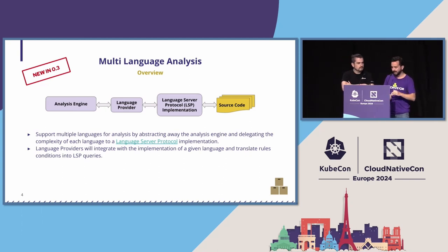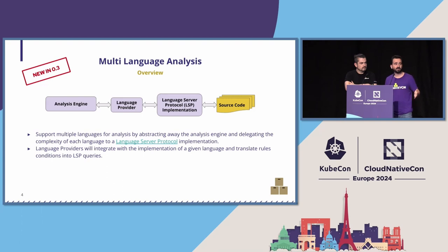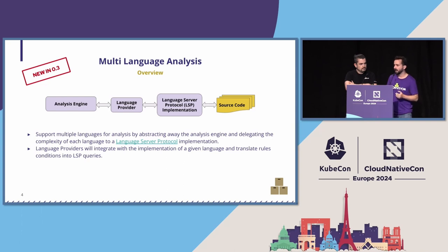Since there are language server implementations for almost every language out there, our idea is to keep adding new providers for analysis to be able to analyze applications in more languages, and to make queries to the language servers that will allow us to get insights on the application code. In our latest release we have support for Java and Go, and there are more to come.